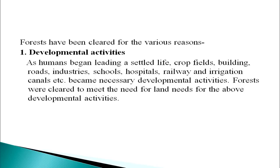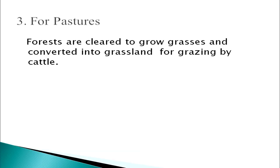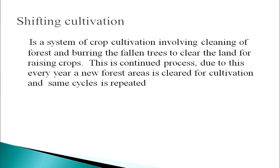Forests were cleared to meet the need for land for the above developmental activities. Wood is used in building construction, making furniture and other articles for human use — trees that yield wood grow in the forest and were cut down for timber. Use of firewood for cooking and heating also contributes to deforestation. Forests are also cleared to grow grasses and converted into grassland for grazing by cattle. Shifting cultivation involves cleaning of forest and burning the fallen trees to clear the land for raising crops — every year a new forest area is cleared and the same cycle is repeated.